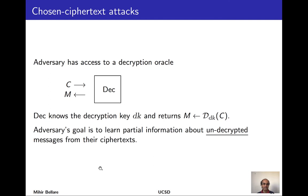We now strengthen the security requirement by giving the adversary access to a decryption oracle. This oracle takes a ciphertext, knows the decryption key internally, and decrypts by running the decryption algorithm. While it might seem that security is impossible with such an oracle, we can still require that any ciphertext not explicitly decrypted through a call remains secure — the adversary has no partial information about the underlying message.